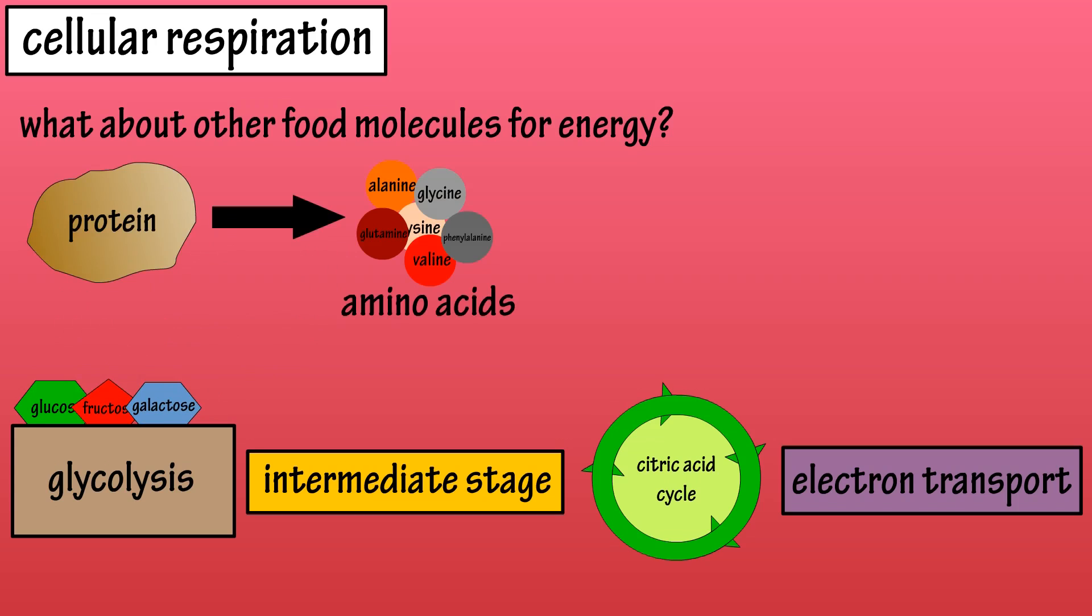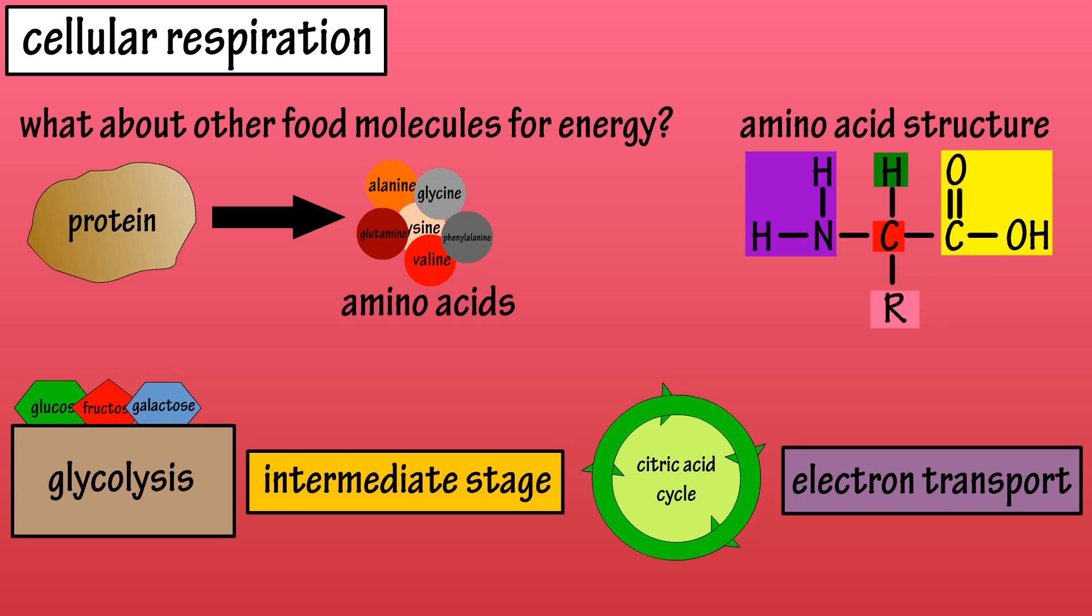Proteins are made up of amino acids, and most of the time they are not used to produce energy via cellular respiration. However, if the body needs to use amino acids for energy, it can. First, they must have their amino NH2 group removed. Once this is done, different amino acids enter the cellular respiration pathway at different stages.